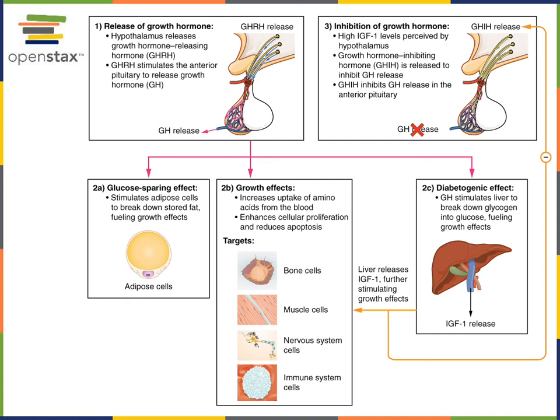This is especially important at the epiphyseal growth plate, where growth hormone stimulates the elongation of bones. In the liver, growth hormone has a diabetogenic effect — it increases the breakdown of glycogen, a polysaccharide that functions as a glucose storage molecule. As glycogen is broken down, glucose is released from the liver into the blood, increasing blood glucose levels, and this glucose can then be taken up by cells and used to fuel growth.